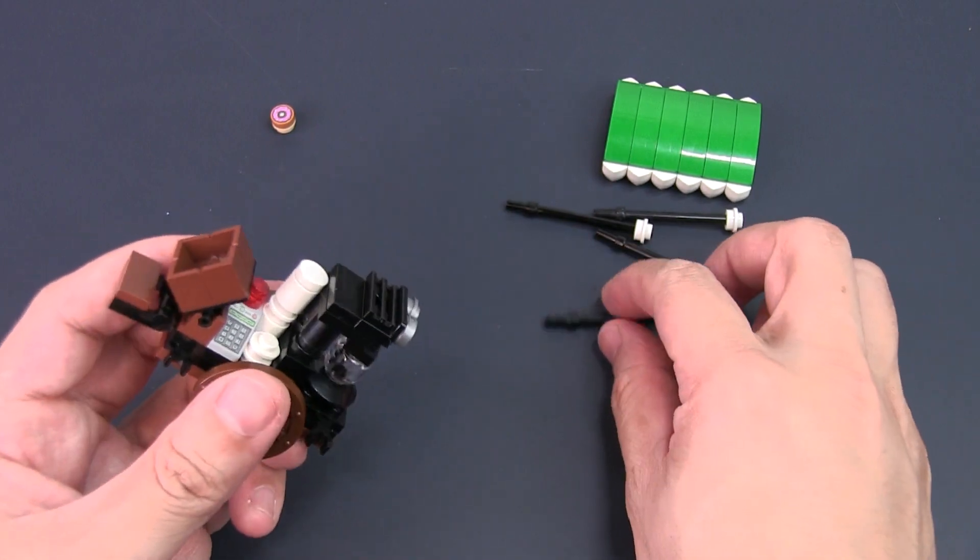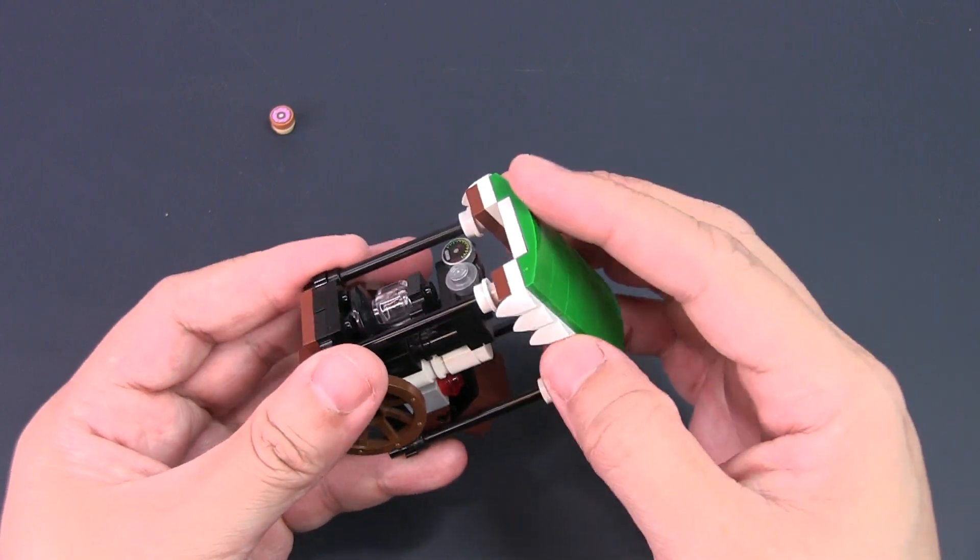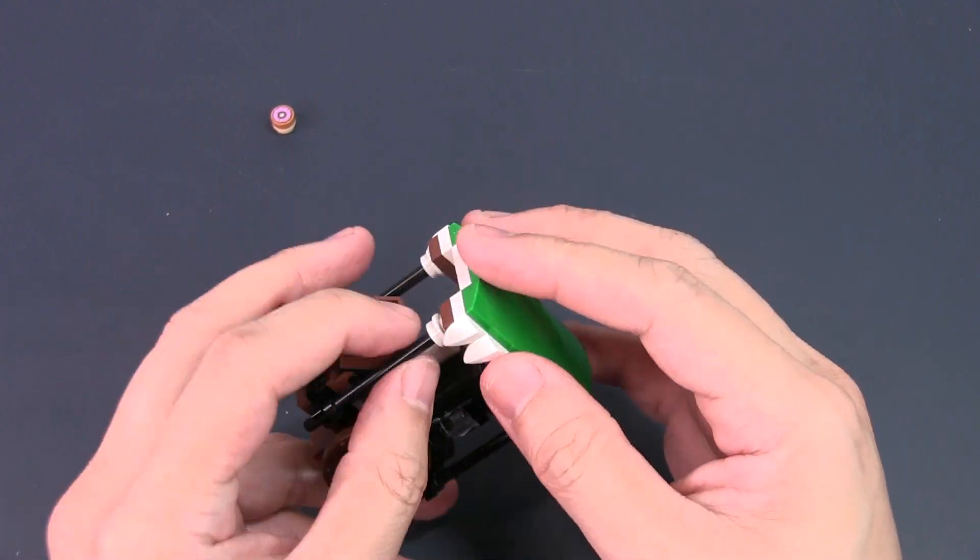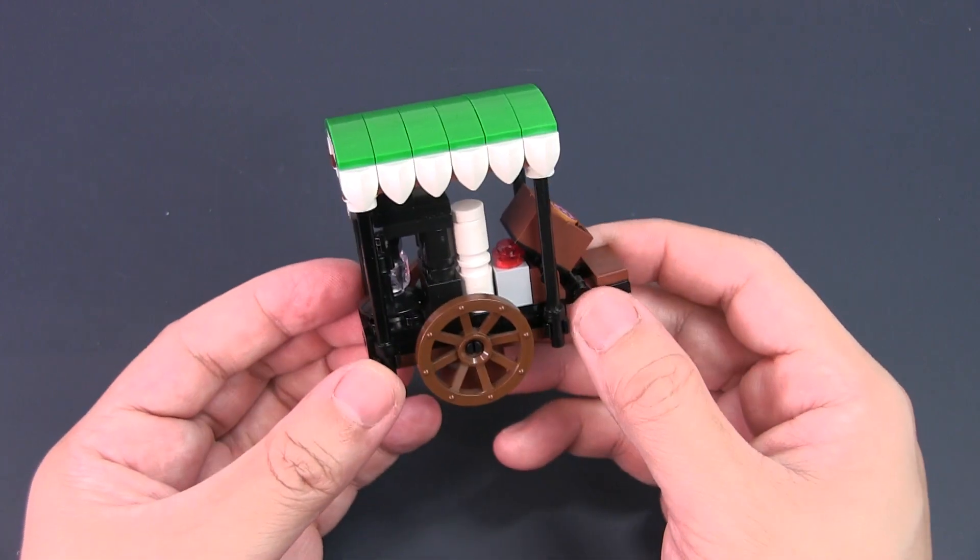Secure the 4 bar elements into the clips in each corner. Take the canopy of the coffee cart and attach it to the top of the 4 supports. Finally, place the pastry into the pastry basket.